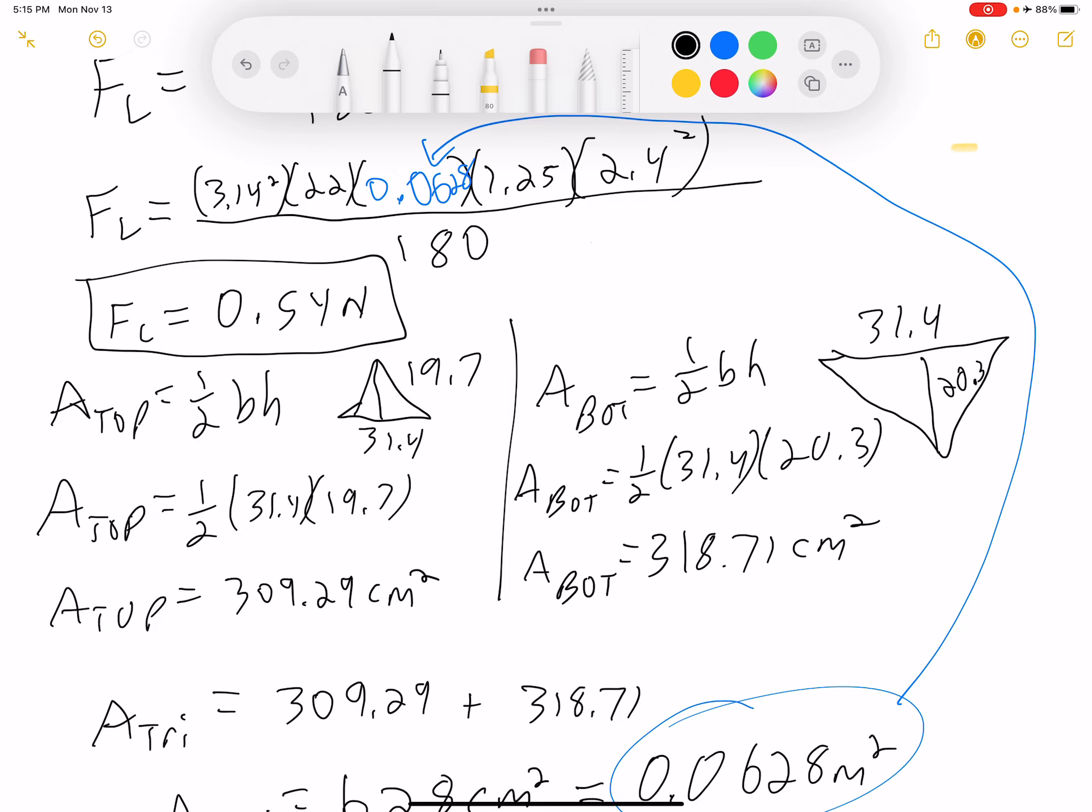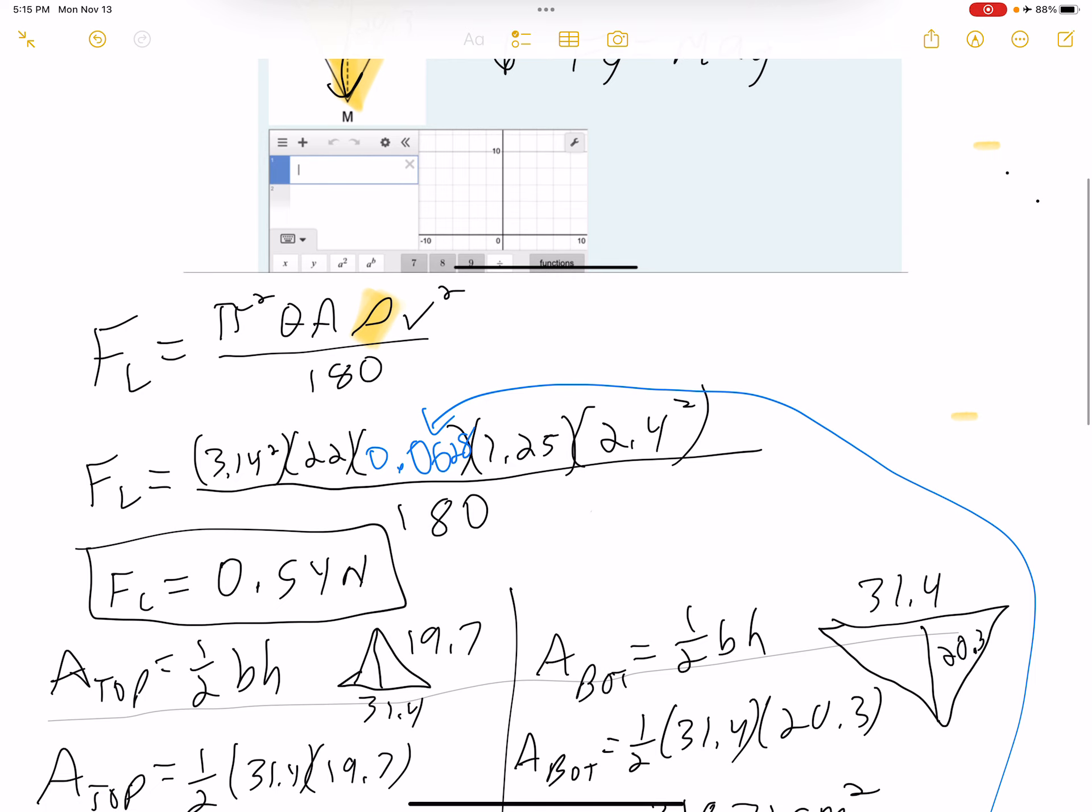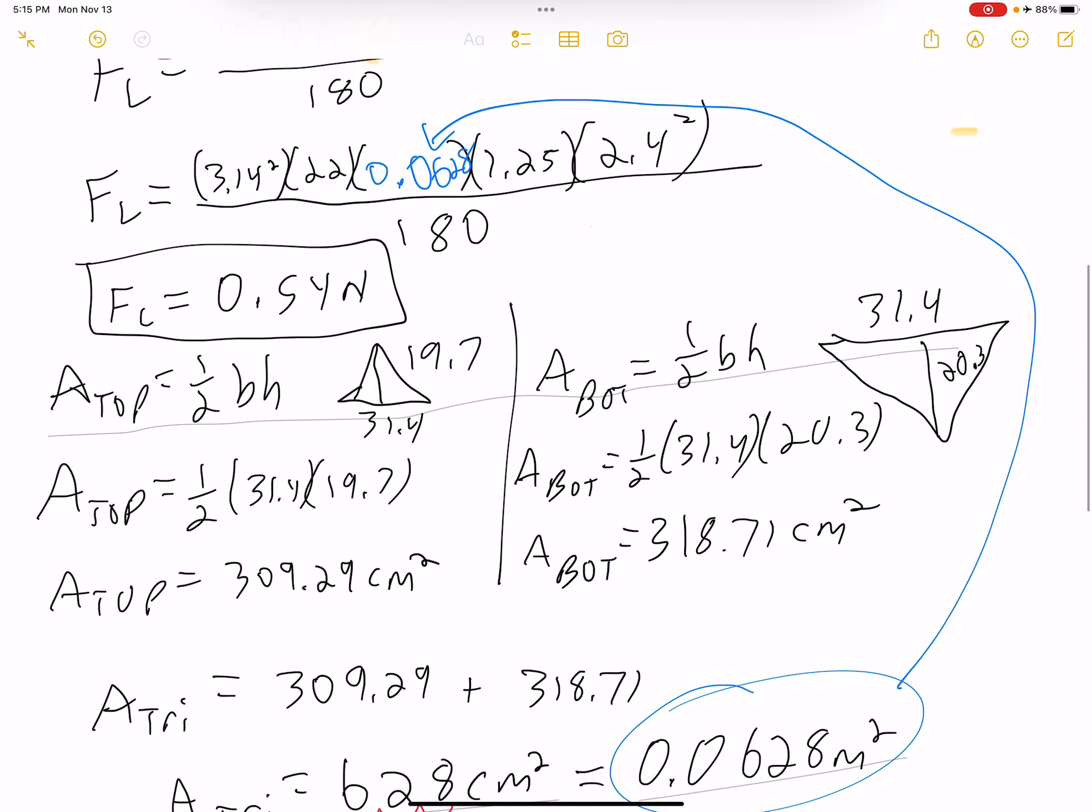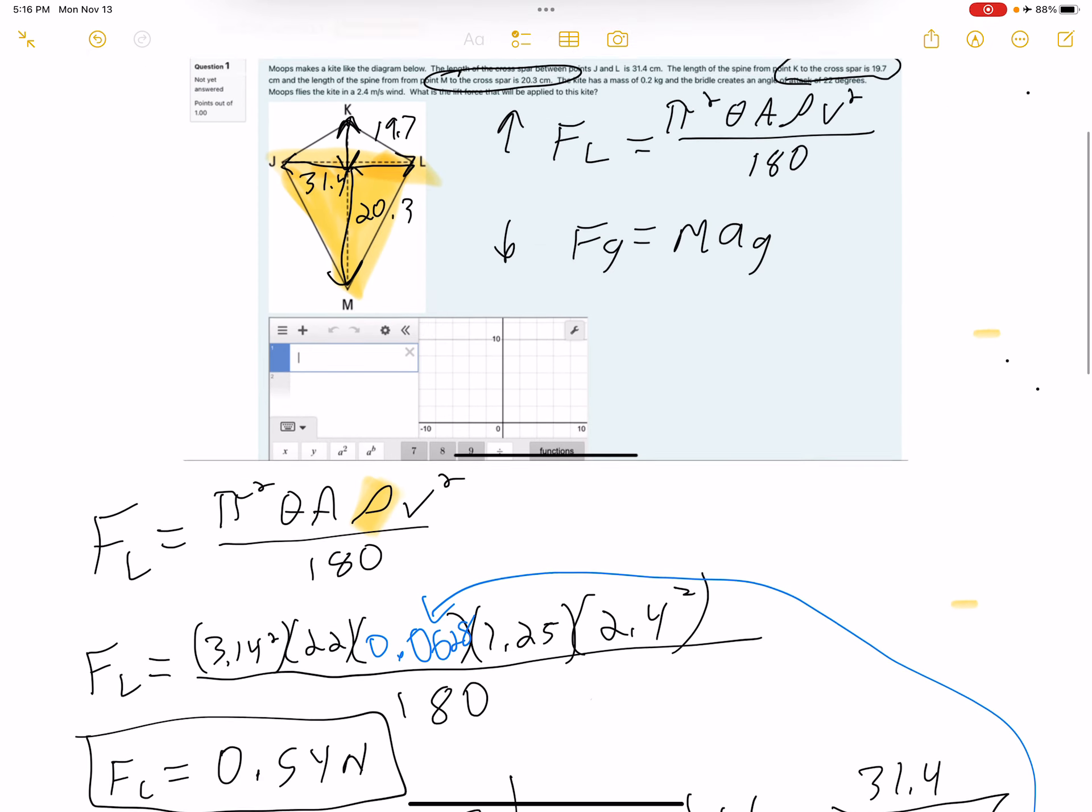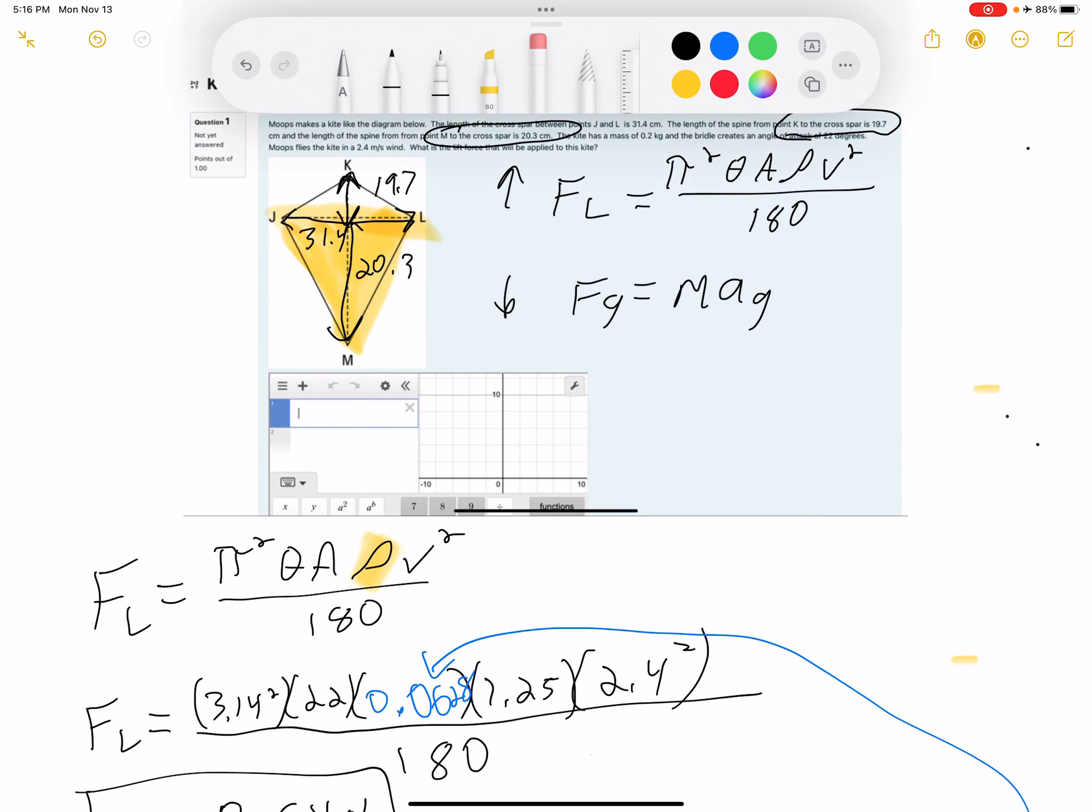So it's a lot of steps, but just look at the equation, plug the numbers into the equation. The hard part I think is finding the area and you have to find the area of both triangles. I did show a way to find the area.